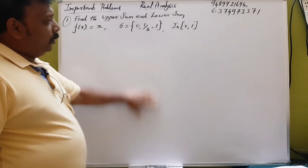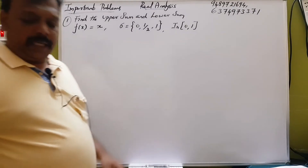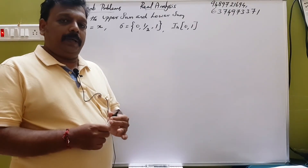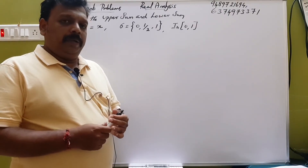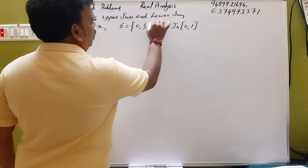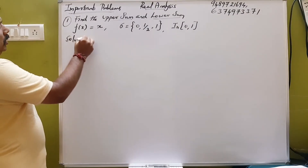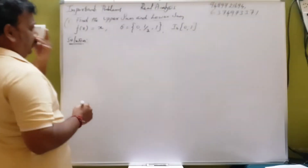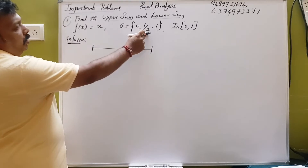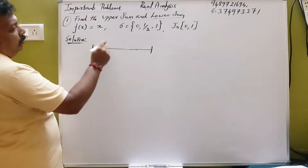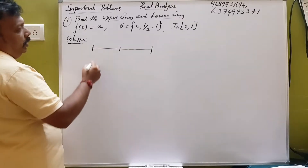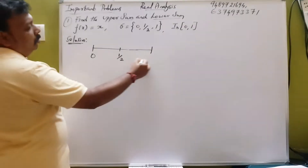I have a mistake. I cannot give you my best idea. I have one mark. If I have a problem, this is a problem. If you want to write a code, you can write how much time it is: 0, 1 by 2, 1. If you want to write 1, 2, 3, then you can write 0, 1 by 2, 1.